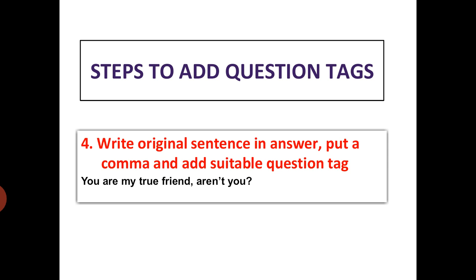Here we have written our original sentence as it is: 'You are my true friend,' then put a comma and added the suitable question tag. As our sentence is positive, we have written the negative question tag 'aren't you.' To summarize: first, find the type of sentence — as it is positive, the question tag must be negative. Second, find the associative verb, which is 'are,' so it becomes 'aren't.' And lastly, find the pronoun which is 'you,' and put a question mark at the end.